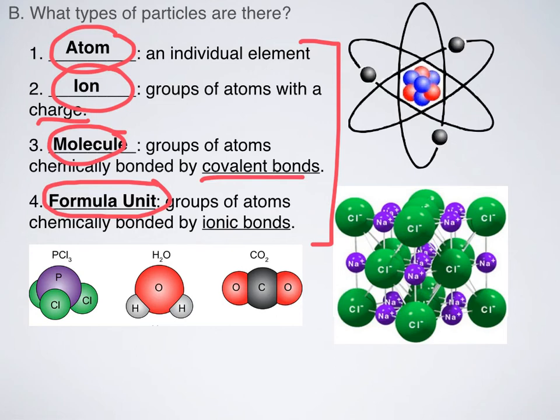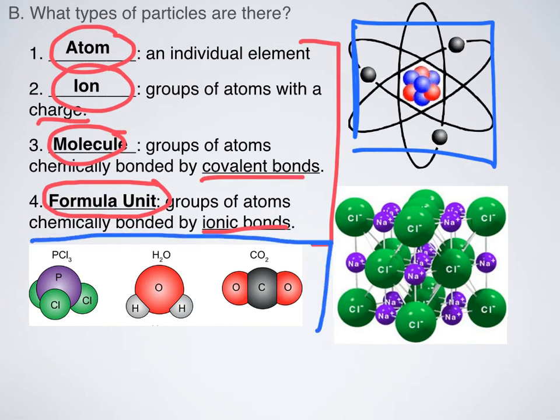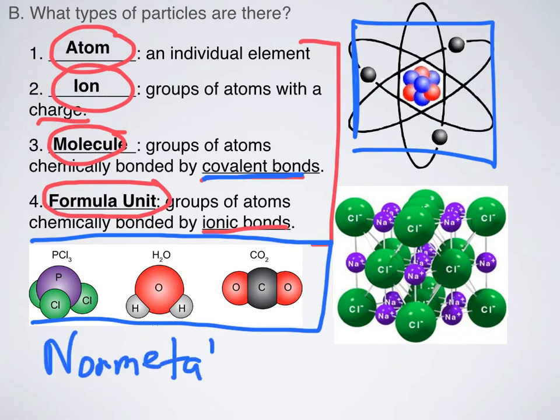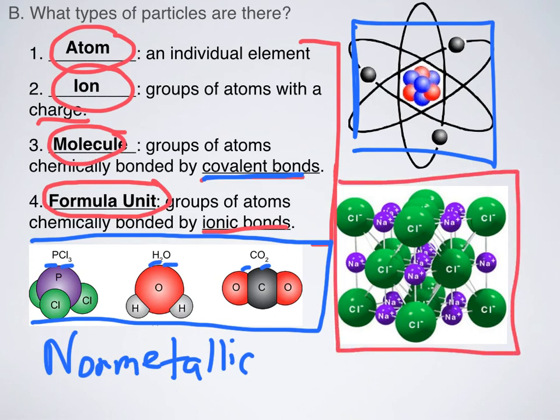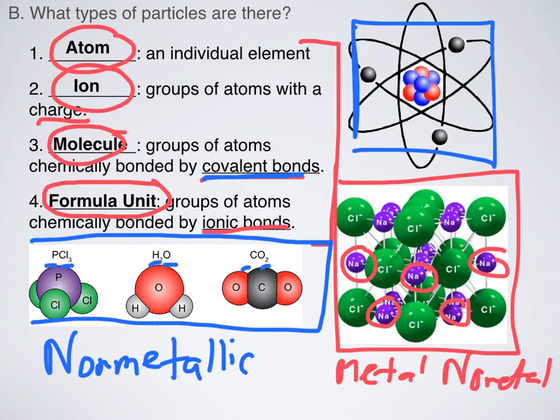So over here, I have a picture of an atom. Over here, I have three examples of molecules. So in case you forgot, covalent bonds are bonds between non-metallic elements. So notice, I have phosphorus and chlorine. I have hydrogen and oxygen. I have carbon and oxygen. Those are all non-metallic elements. Formula units, on the other hand, are groups of atoms that are bonded with ionic bonds. So I have a picture of that right here. Ionic bonds happen between metals and between non-metals. And so in this picture, I have my metallic ion, which is sort of sodium, and then I have my non-metallic ion, which is chloride. And so those are our four major types of particles.